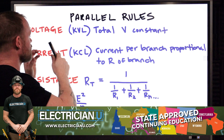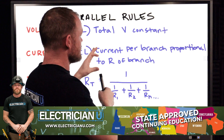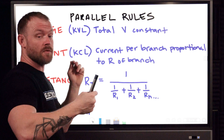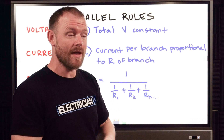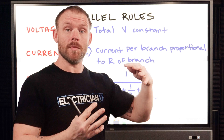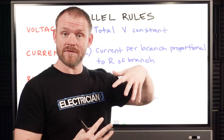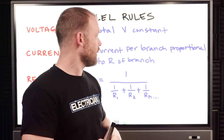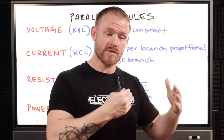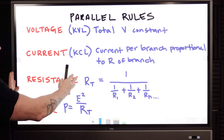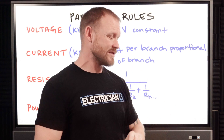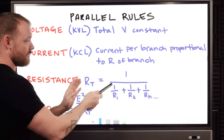Kirchhoff's Current Law says that the current per branch is going to be proportionally affected based on the resistance of that branch. We have to analyze the resistance of each branch, which determines how much current flows through each resistor. So each branch is going to have a different current. Total resistance looks different too — in a series circuit we just add up all the resistances, but for a parallel circuit we use a different formula.